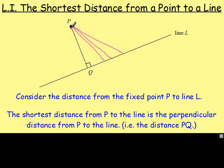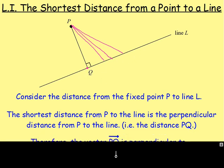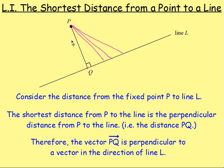In other words, it's the distance going from P down to point Q, which will be at right angles to the line. Because the distance PQ is at right angles to the line, that also means the vector PQ will be perpendicular to a vector that's in the direction of the line. So using all this information and knowledge, let's try answering a question.